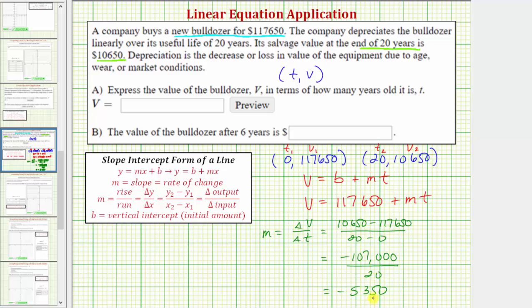So this is the slope of the line, which tells us that each year the bulldozer is depreciated, or decreases in value, by $5,350. So to find our equation of V in terms of T, we substitute negative 5,350 for M in our equation here. So our equation is V equals 117,650 minus 5,350T.